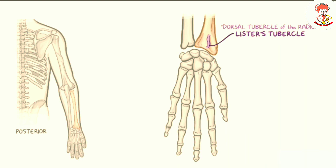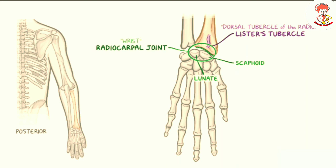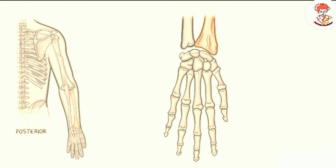At the tip of the distal radius there is a smooth, slightly concave surface that articulates with the carpal bones, specifically the scaphoid and the lunate, to form the radiocarpal joint, commonly called the wrist. On the lateral side of the distal radius there is a pointed bony projection called the styloid process of the radius, which projects more distally than the ulnar styloid process. In the next lecture, we will discuss the wrist bones. Thanks for watching.